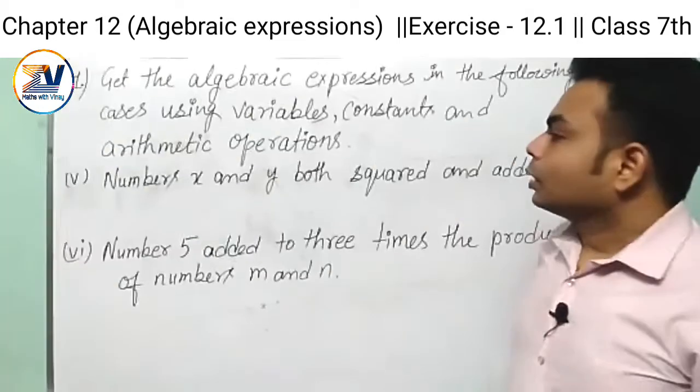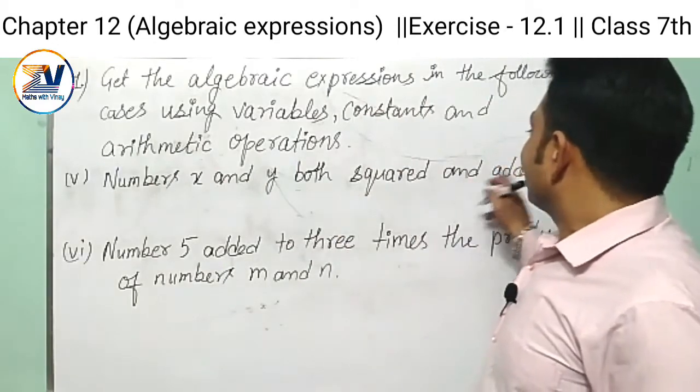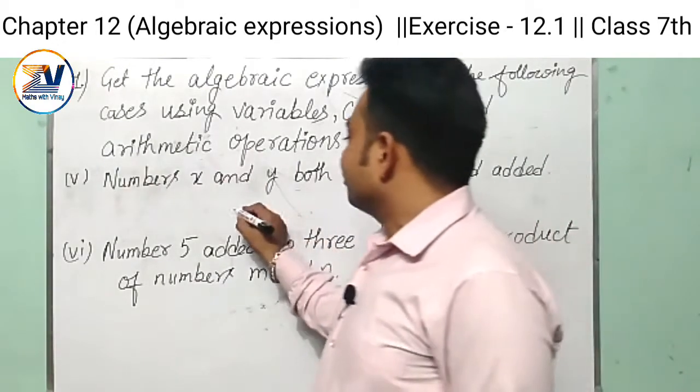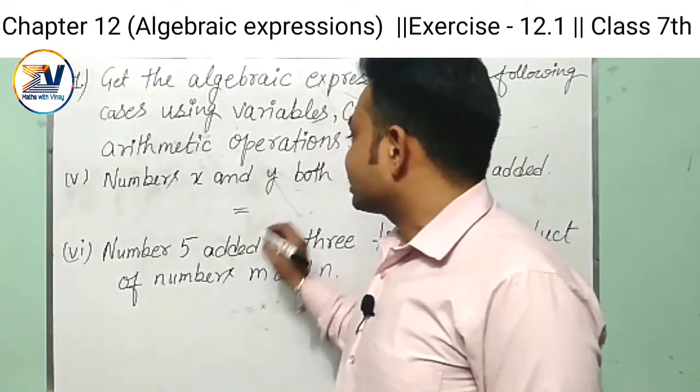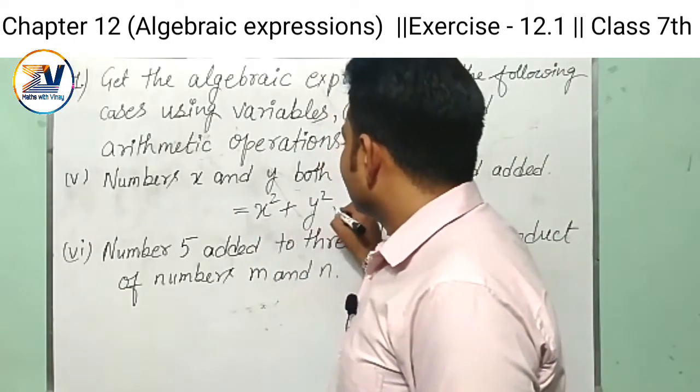Now the fifth part: numbers x and y both squared and added. Firstly we find the square of both the numbers, x squared and y squared, and add both the numbers. So this is our expression x squared plus y squared.